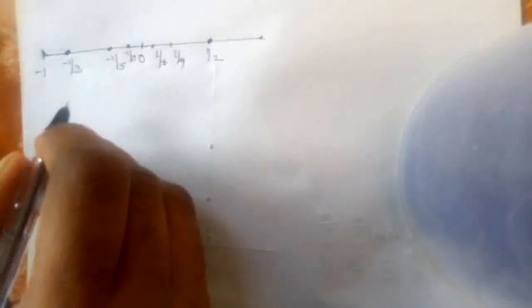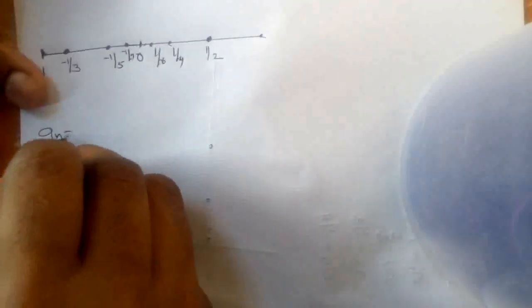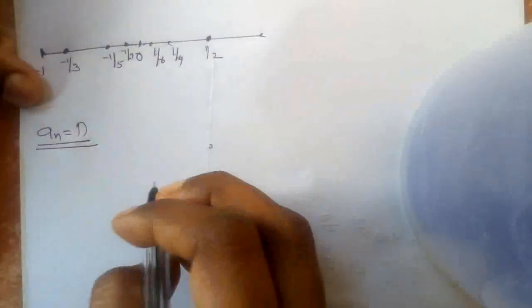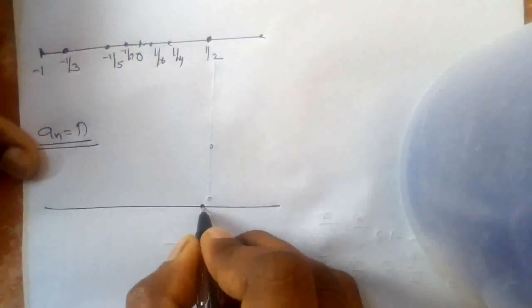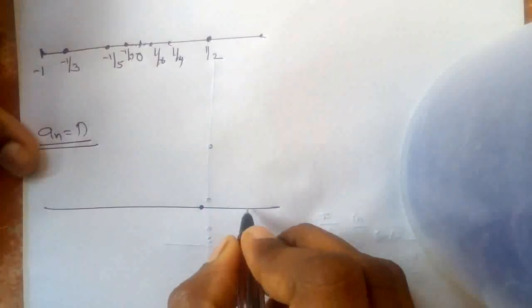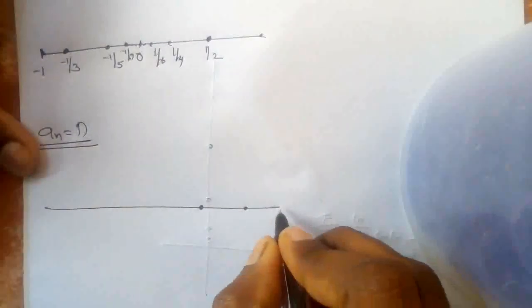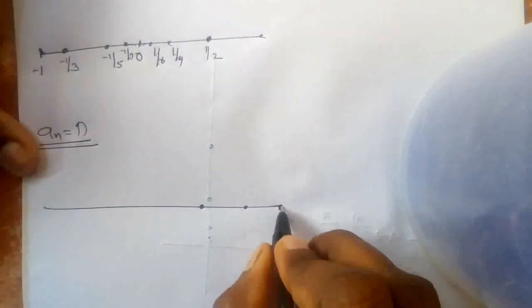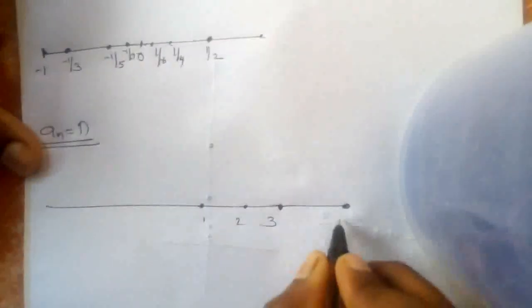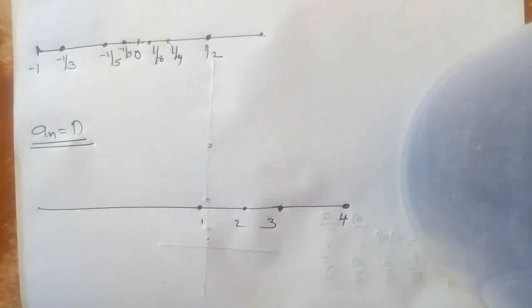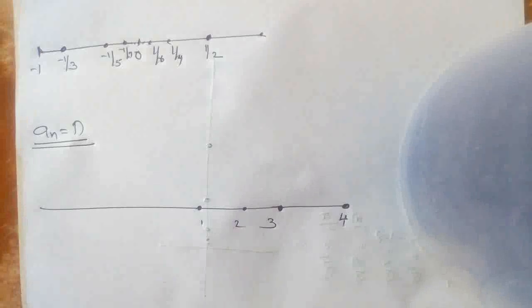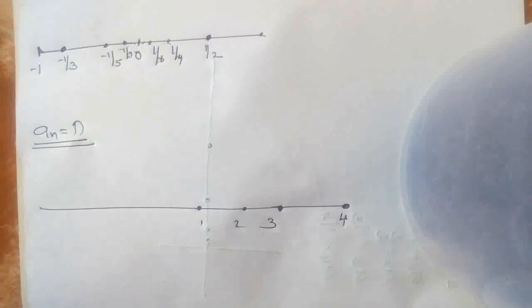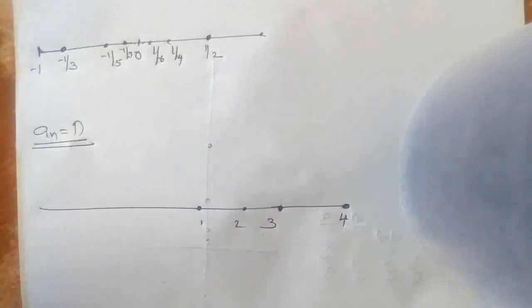We can consider another sequence: a_n = n. Here n=1 gives 1, n=2 gives 2, n=3 gives 3, n=4 gives 4, n=5 gives 5. In this sequence, as n goes to infinity, a_n also goes to infinity. A_n does not come to any finite number; it goes to infinity.